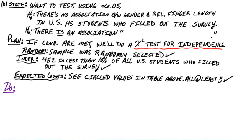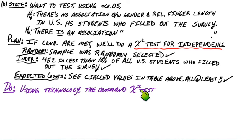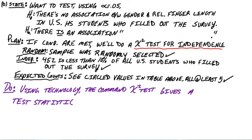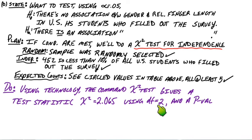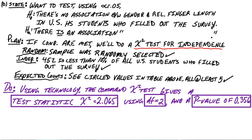For the do step, we need the test statistic, degrees of freedom, and p-value using our calculator with the chi-square test command. You have to enter the observed counts into matrix A and the expected counts into matrix B. This gives a test statistic of chi-square equal to 2.065, which uses two degrees of freedom, and a p-value of 0.356, which is actually pretty high.